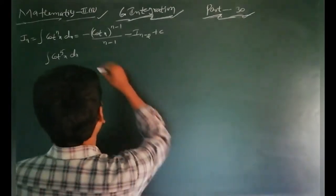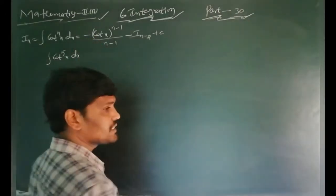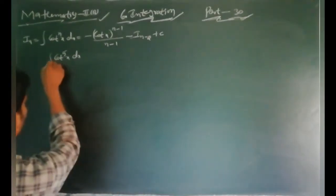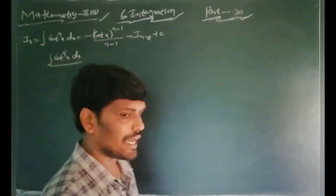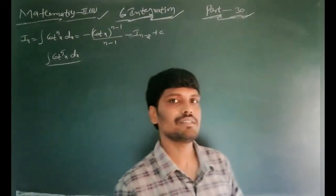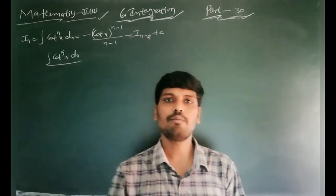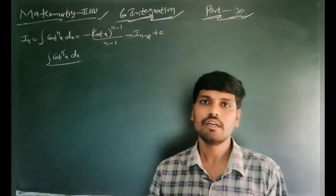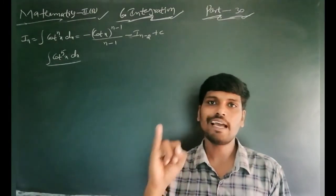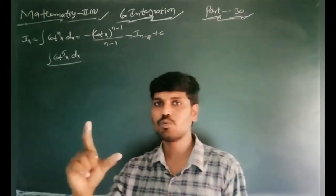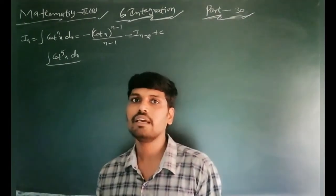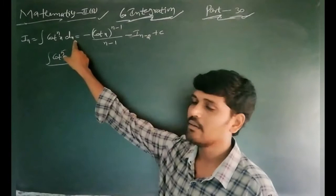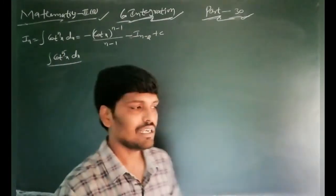Using this reduction formula of cot^n x dx, we can solve problems. In the IP examination, the reduction formula proof is compulsory, and one problem is also given. Especially for tan^n x and cot^n x — these proofs are very easy. The proof carries 5 marks and the problem carries 2 marks.